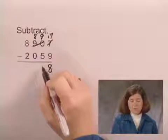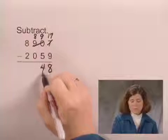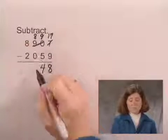9 minus 5 is 4. In the hundreds column, 8 minus 0 is 8.